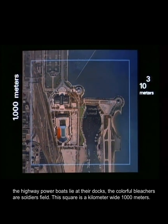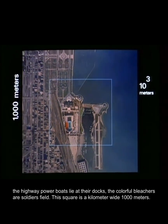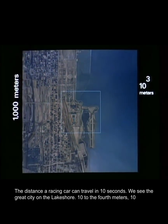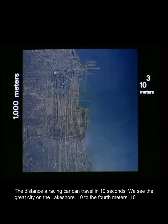Cars crowd the highway, powerboats lie at their docks, the colorful bleachers are Soldiers Field. This square is a kilometer wide, 1,000 meters, the distance a racing car can travel in 10 seconds. We see the great city on the lakeshore.